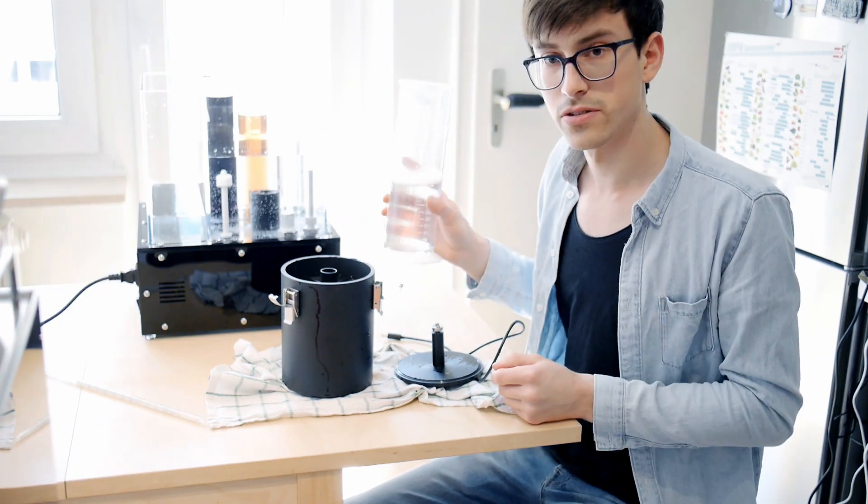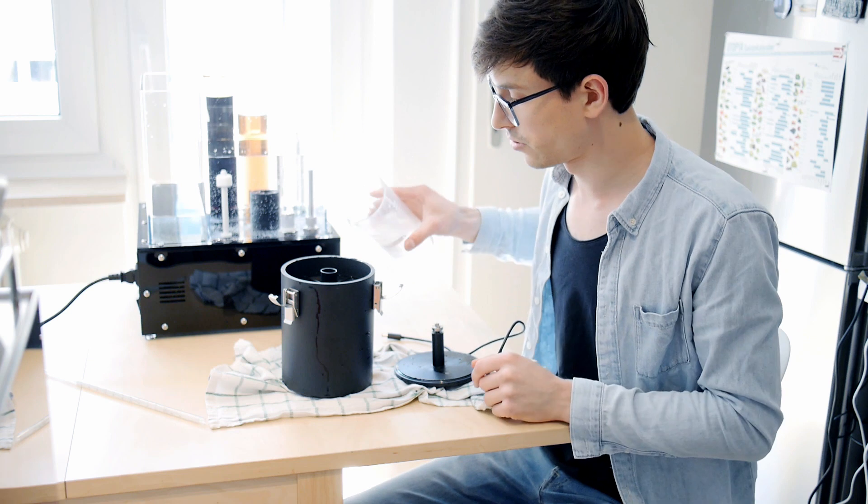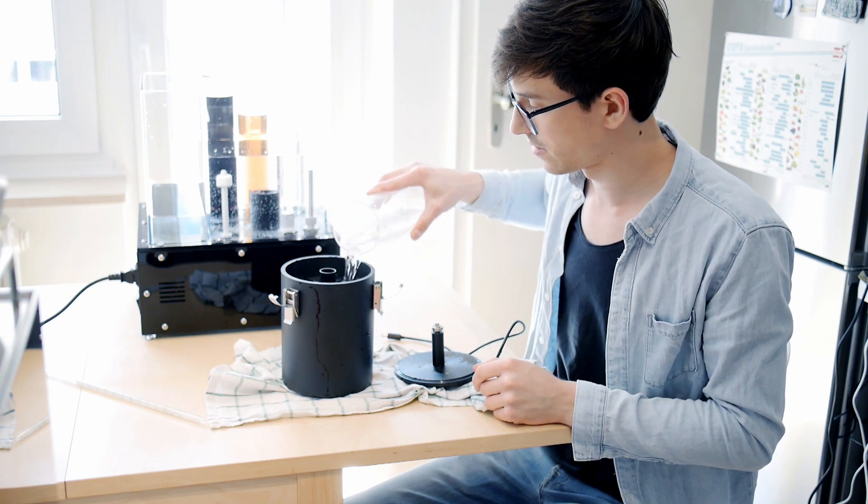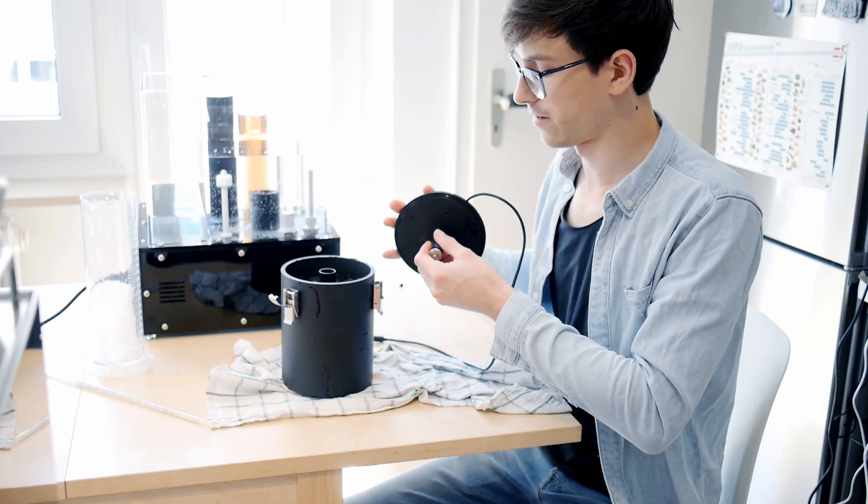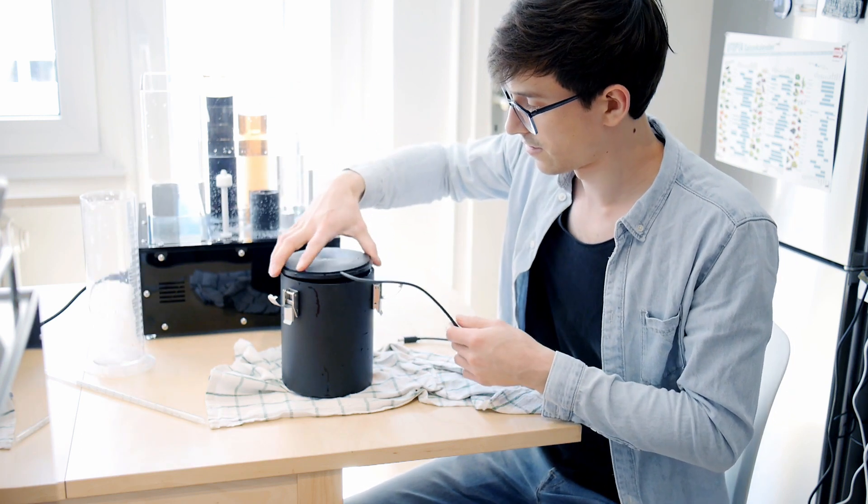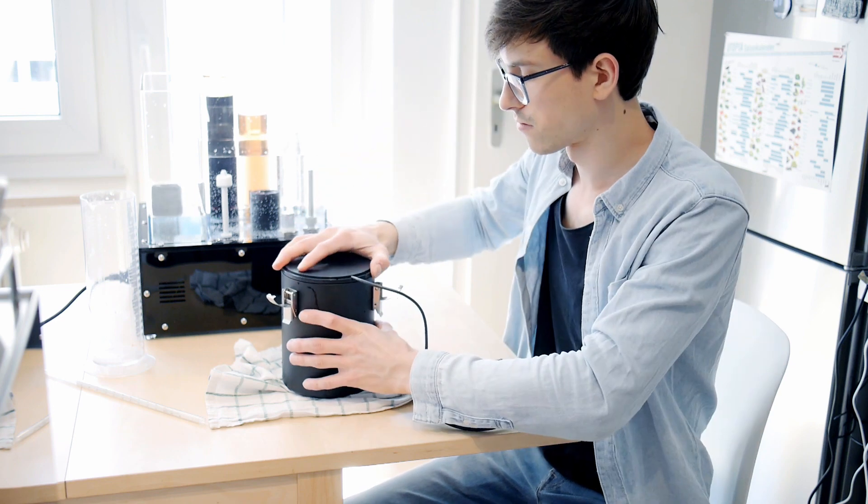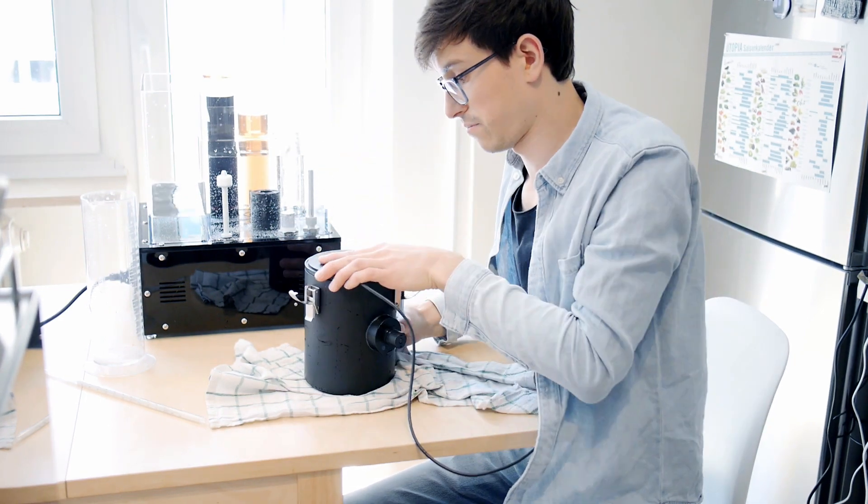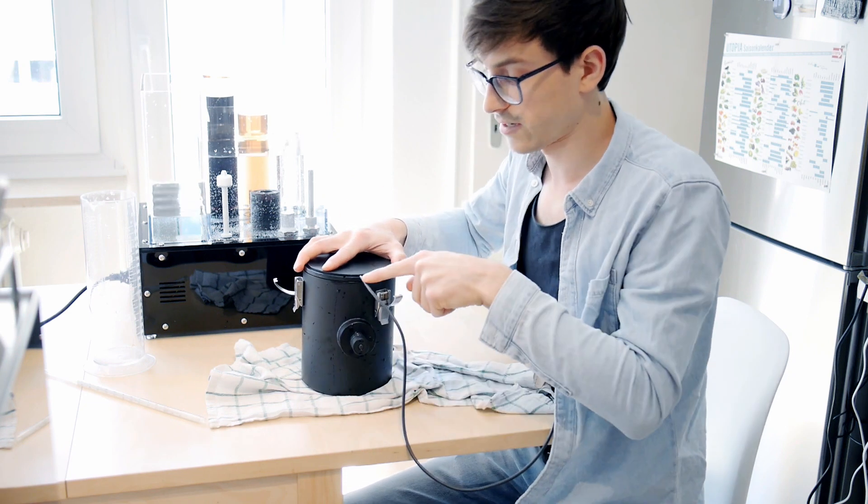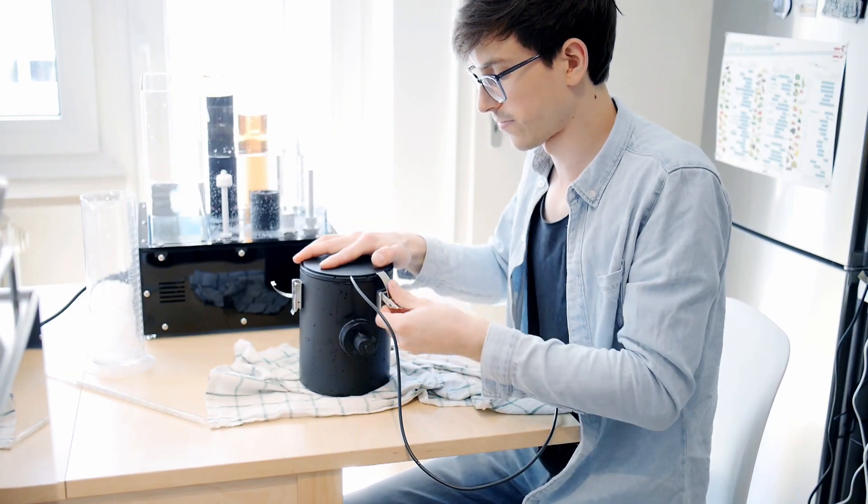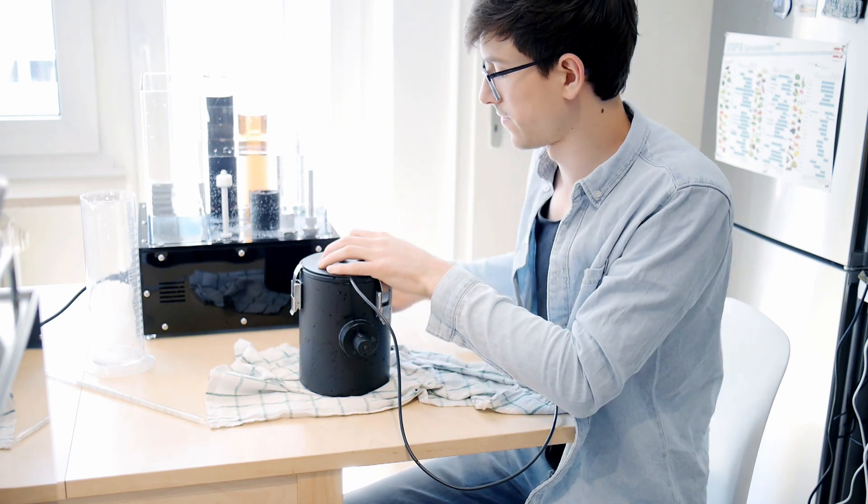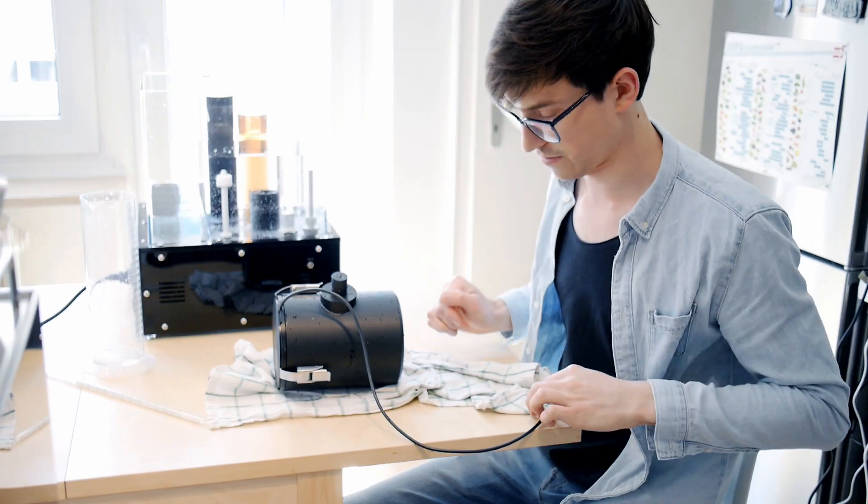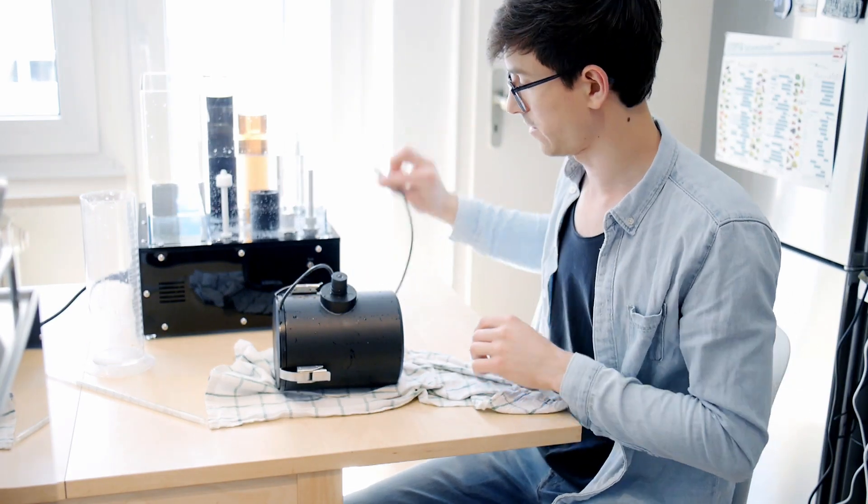I have the stabilization solution here and I will just pour it in like that. Then put on the cap again, and this time putting the cap on so that the cable is on the same side as this connector. Close the lid and now just place it like this on the bench and connect the cable again.